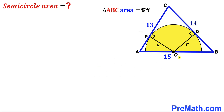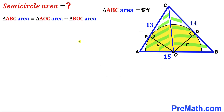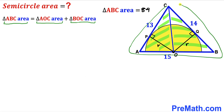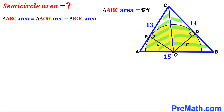We connect center O with vertex C. Now we observe that the area of the bigger triangle ABC equals the sum of the areas of the two individual triangles: triangle AOC and triangle BOC.